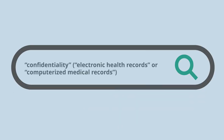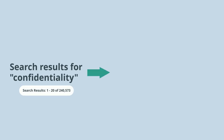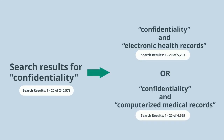With the brackets placed correctly, we will retrieve articles containing confidentiality and electronic health records, or articles containing confidentiality and computerized medical records, or articles containing confidentiality and both terms. This strategy helps you expand your search to capture additional relevant results that use alternate wording.